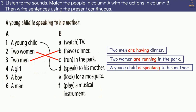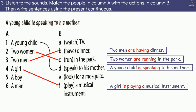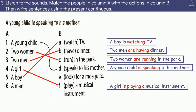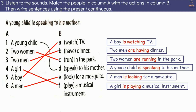Answers continued: 4. A girl is playing a musical instrument. 5. (Creatures becoming extinct — nature programme.) 6. A man is looking for a mosquito.